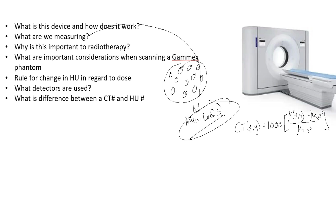When you scan the GAMEX phantom, you can say: I know acrylic has this electron density, and my scanner is giving me this CT number for acrylic — so that CT number is related to this electron density. You need to scan it annually, use constant kVp settings because at high Z values this makes a significant difference. Also, the different plugs need to be in the same exact position each time, because moving them exposes them to different energy and different scattering, which can change the HU value.